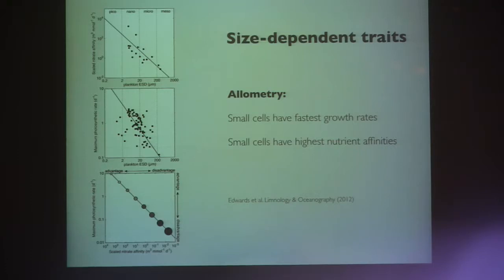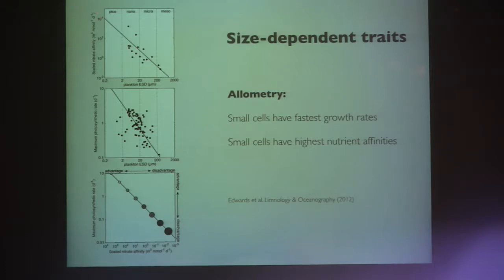Looking at two key physiological traits with this allometric parameterization: nitrate affinity — the competitive ability for nitrogen at low concentrations — plotted against plankton size, shows affinity goes down as cells get bigger, due to trade-offs with size, diffusion, and surface area. So it's better to be small for higher affinity. Maximum growth rate from Kyle Edwards' data shows the same trend.